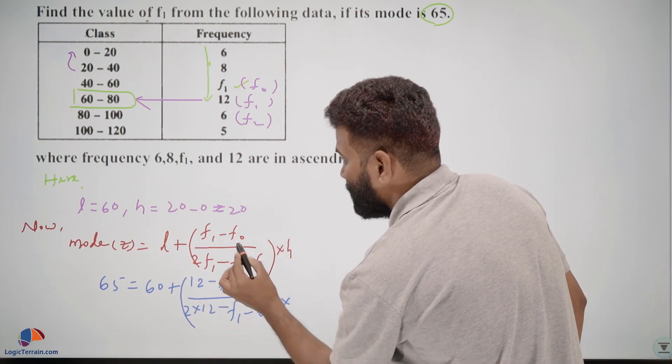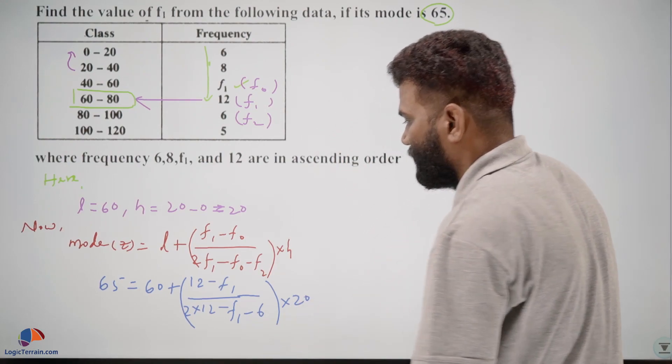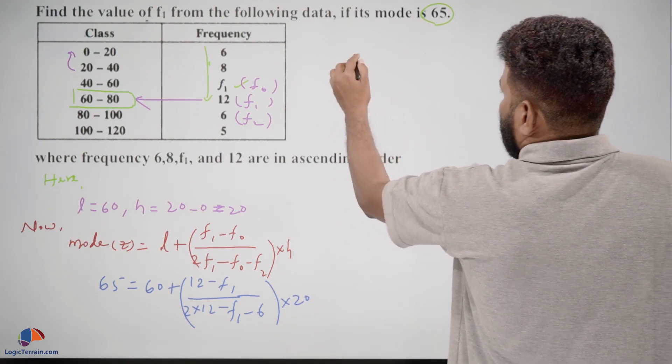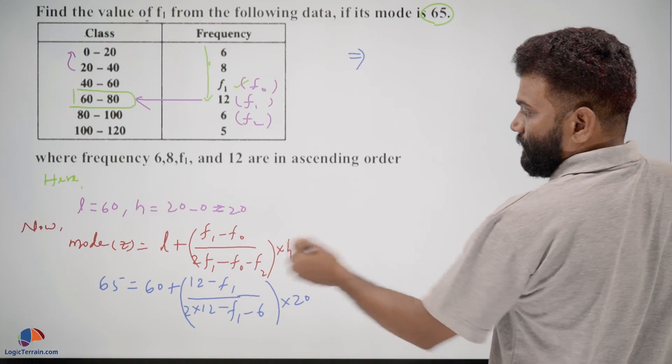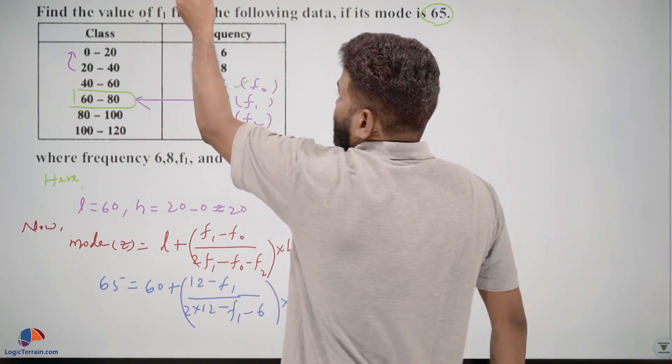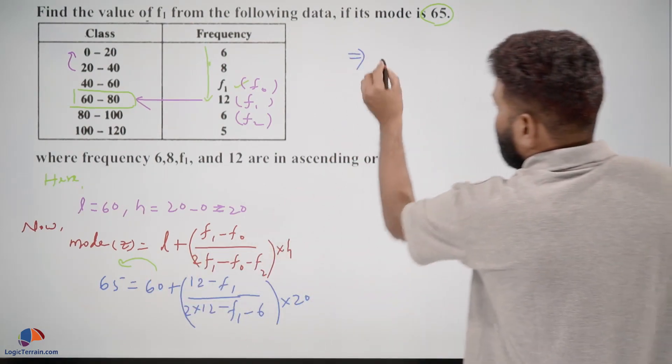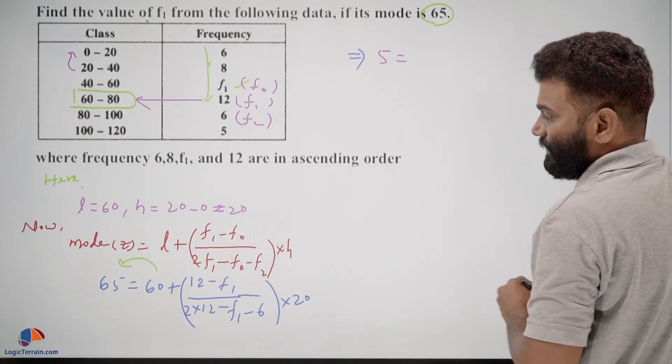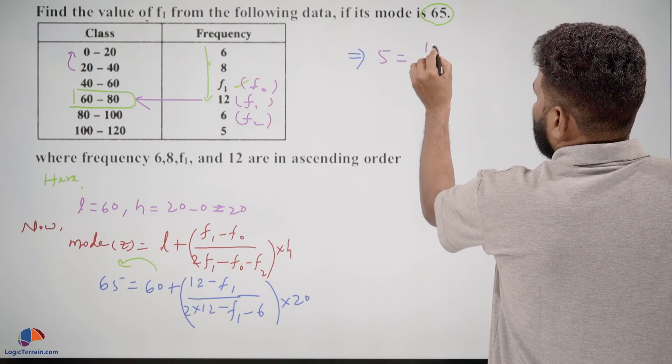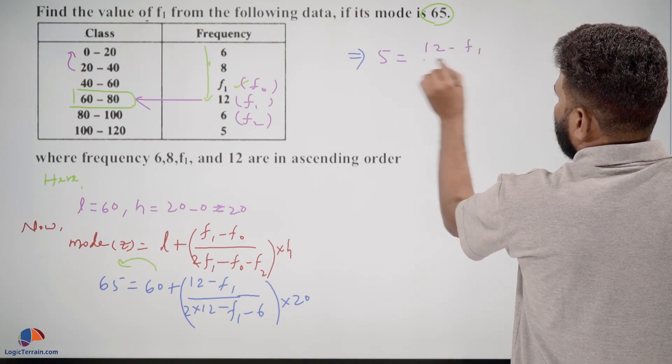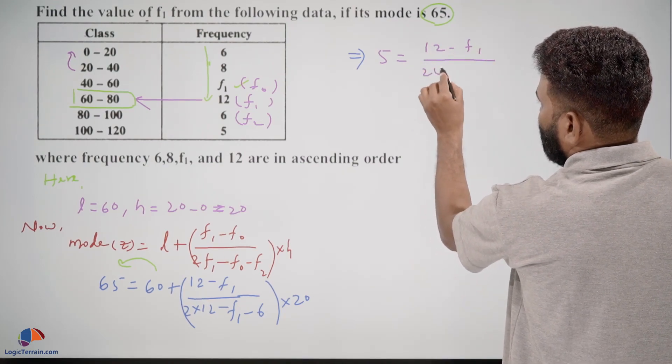So further, if you take this 60 to the other side it becomes negative, 65 minus 60, so you're left with 5, and 12 minus f1 upon 2 into 12, 24 minus f1 minus 6 into 20.